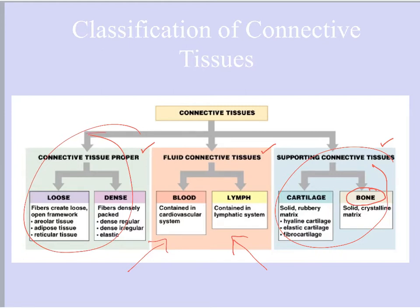Within connective tissue proper there are two subtypes: dense and loose. Under loose connective tissue you have areolar, adipose, and reticular tissue. Under dense connective tissue proper there are three specific types: dense regular, dense irregular, and elastic. You can really get caught up in the details quickly, so practice drawing this chart often to keep everything organized.